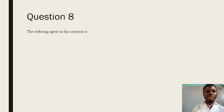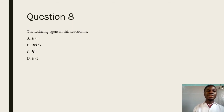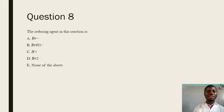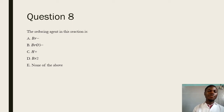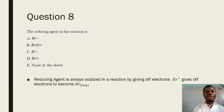Question 8 says: the reducing agent in this reaction is — the reducing agent in a reaction is that species that is going to be oxidized, that gives off electrons and gives off hydrogen to become oxidized. The answer is going to be A, the bromide ion.